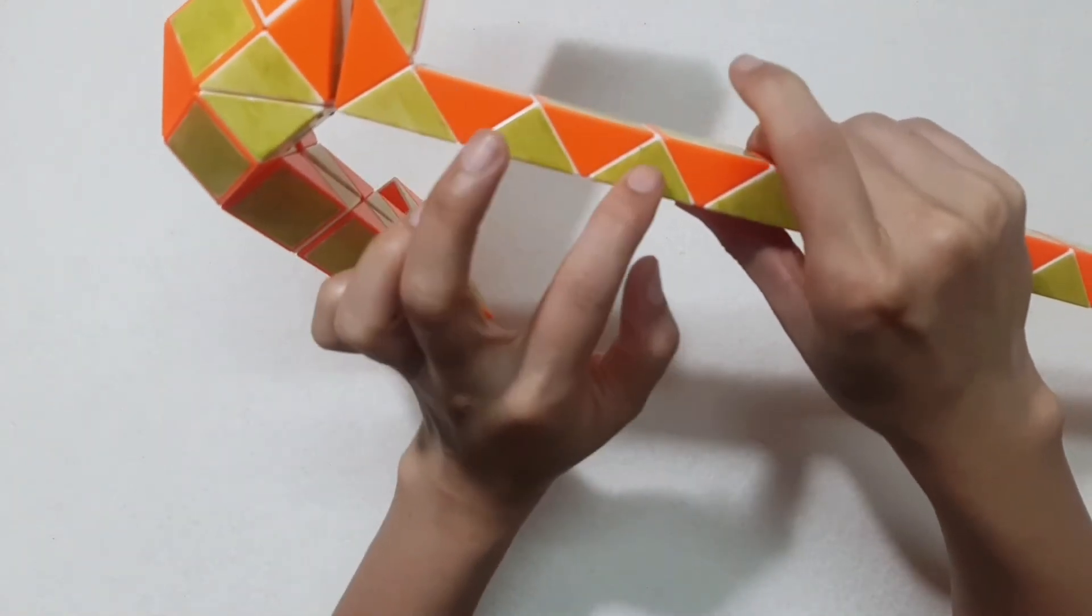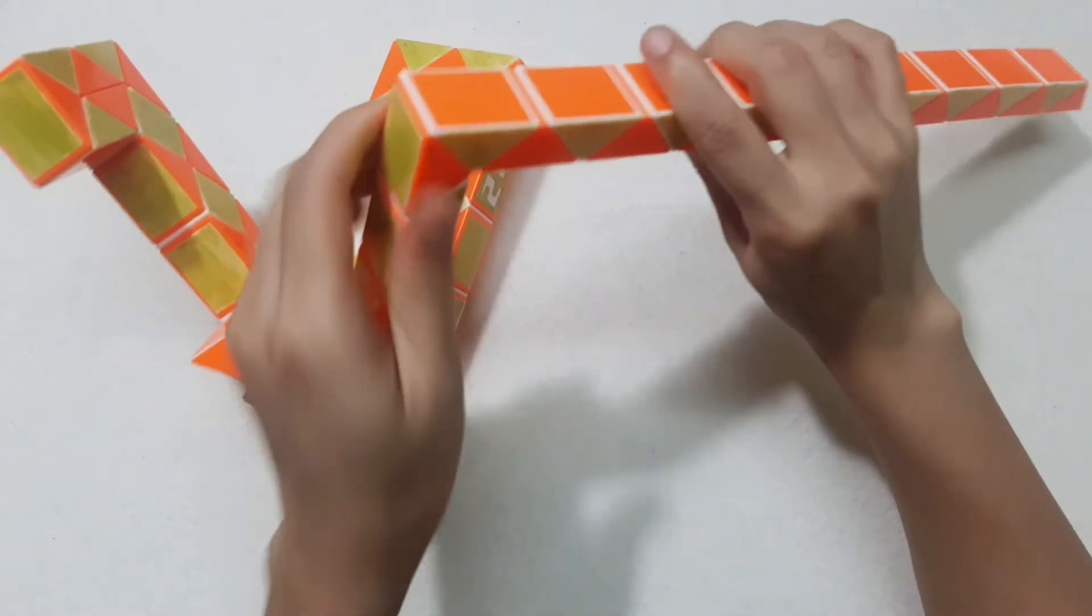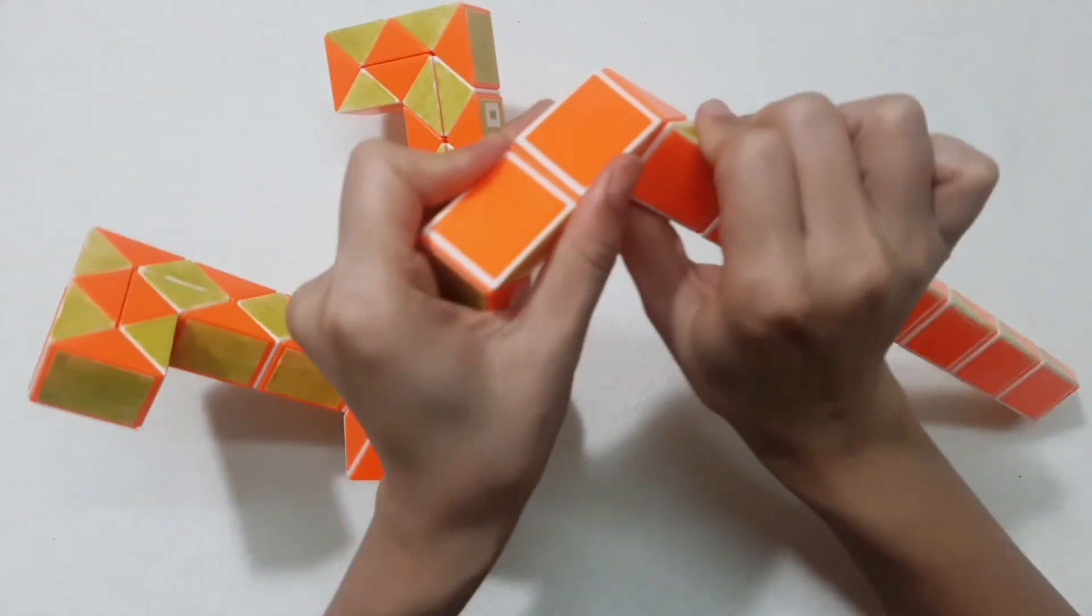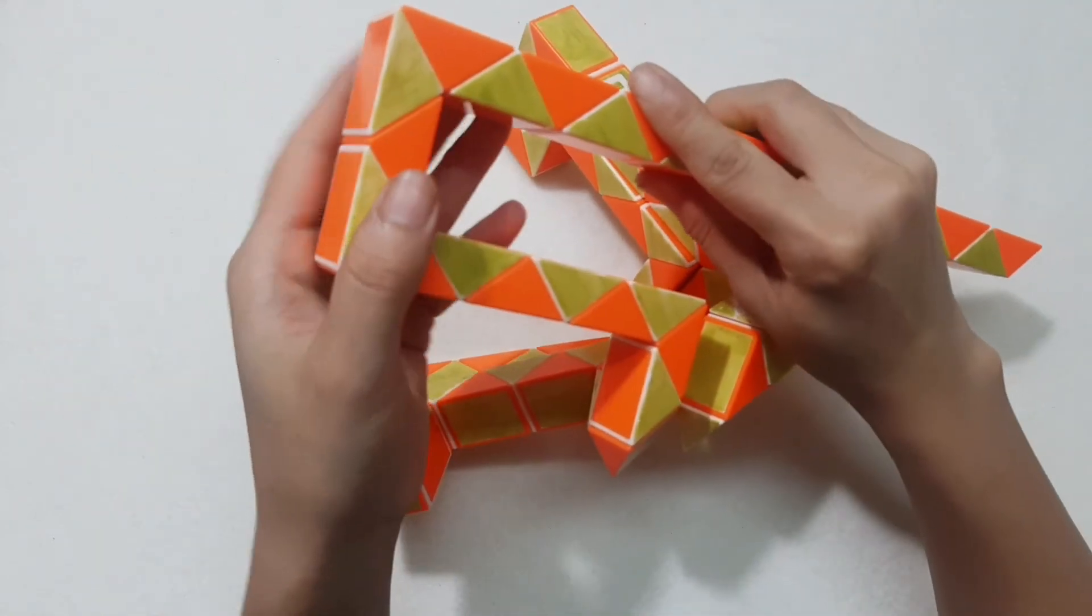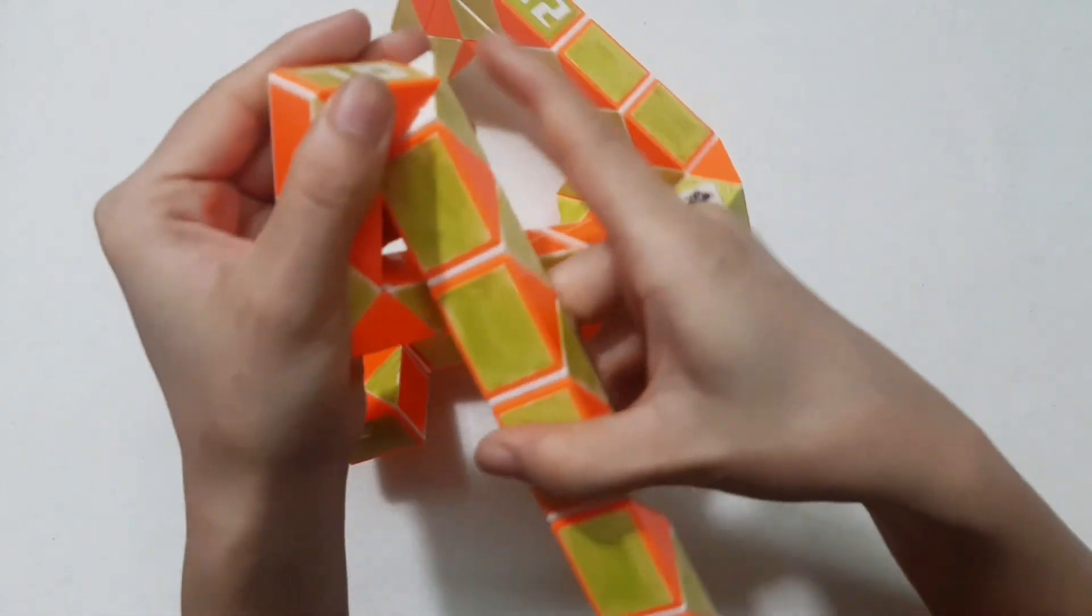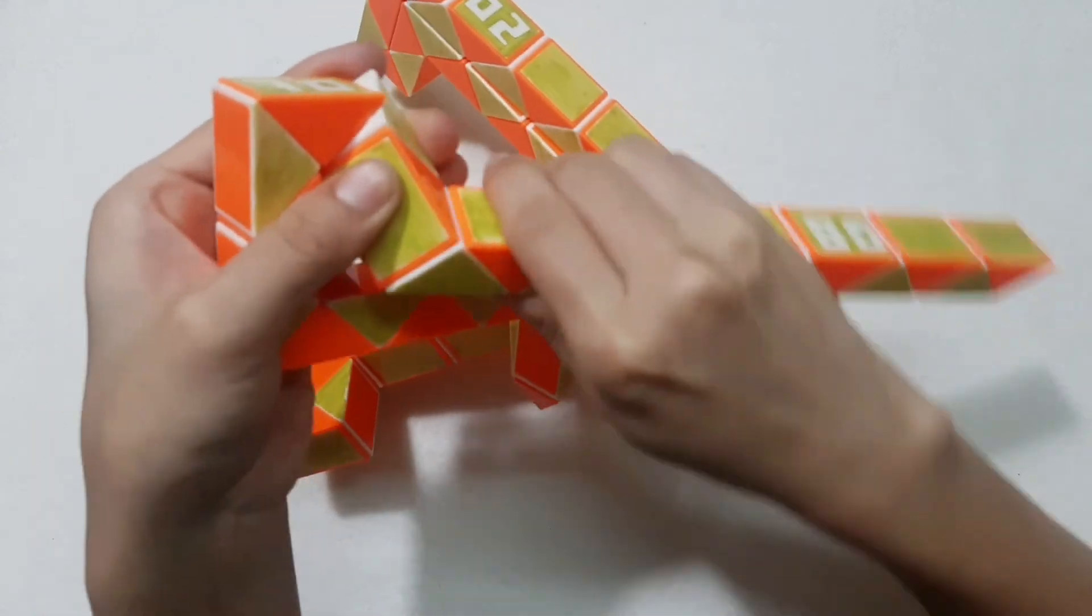1, 2, 3, 4, 5, 6, 7, go to the right side. 1, 2, 3, 4, go down. Then go this side. 1, 2, 3, move to the right.